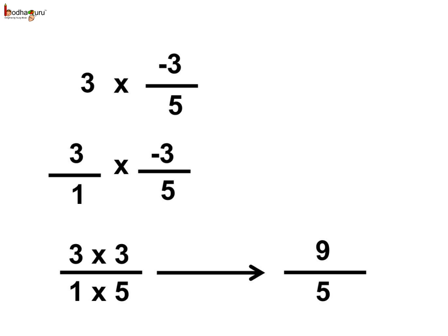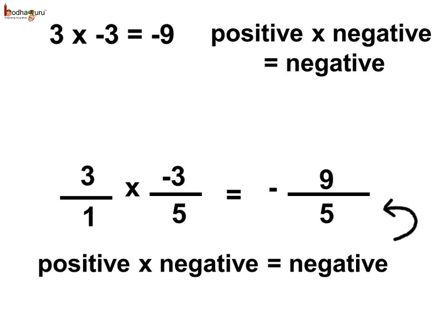Here we multiply the numerator by the numerator, so it is 3 multiplied by 3, which is equal to 9. And then we multiply the denominator by the denominator, so 1 multiplied by 5, which is equal to 5. Now, what about the negative sign? When we multiply a negative integer by a positive integer, the result is a negative number. The same is applied to rational numbers too. Negative rational number multiplied by positive rational number equals a negative rational number. So 3 multiplied by minus 3 by 5 gives a result which is a negative rational number, equal to minus 9 by 5.